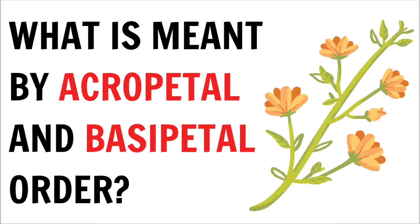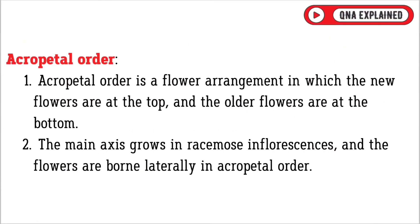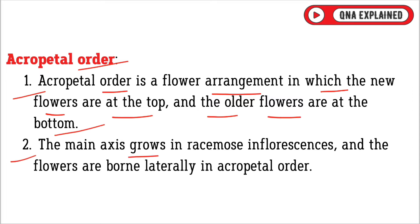What is meant by Acropetal and Basipetal order? Acropetal order is a flower arrangement in which the new flowers are at the top and the older flowers are at the bottom. The main axis grows in racemose inflorescences and the flowers are borne laterally in acropetal order.